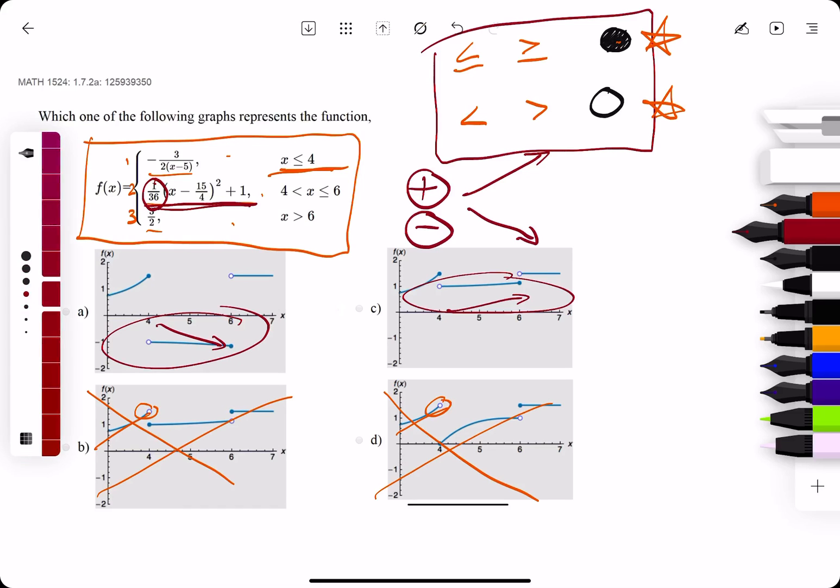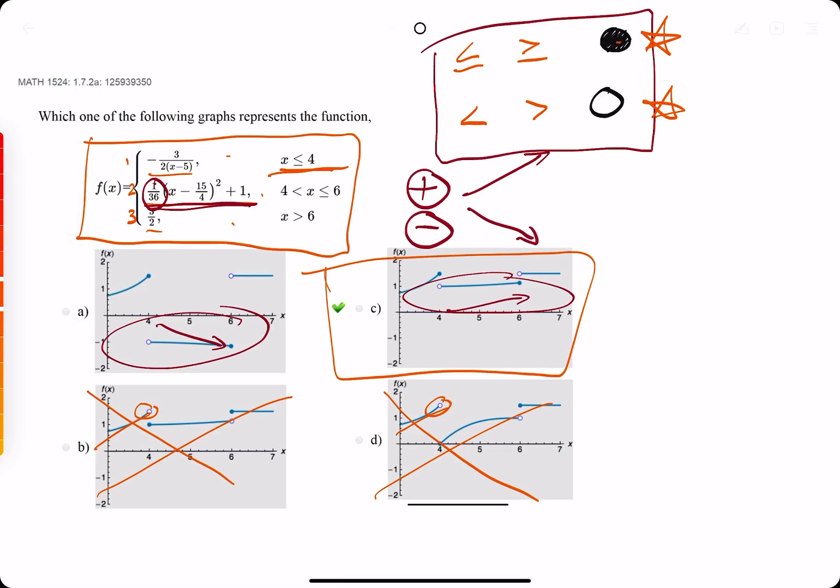So that should give us our answer right away, which is c. We found that by looking at the inequalities and the open and closed circles, and then the middle piece of the function that it's increasing based on the 1 over 36.